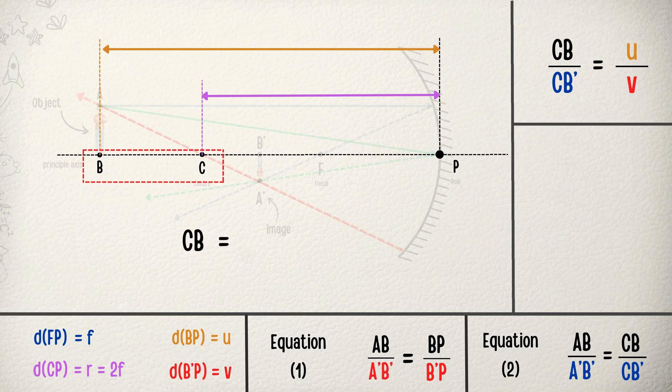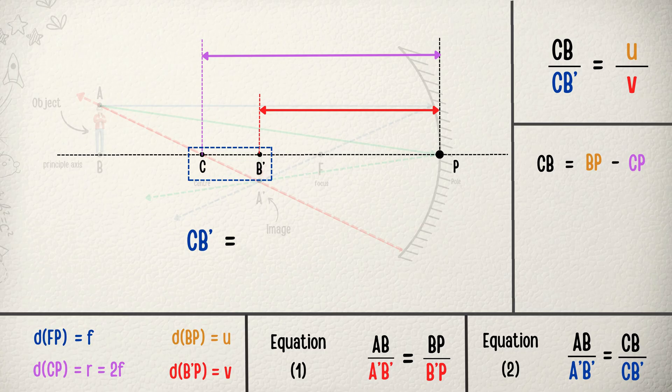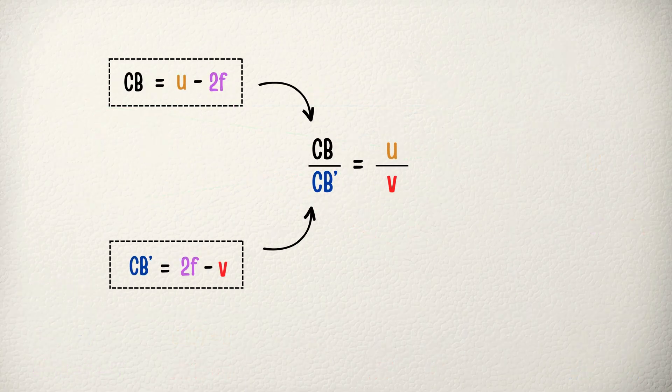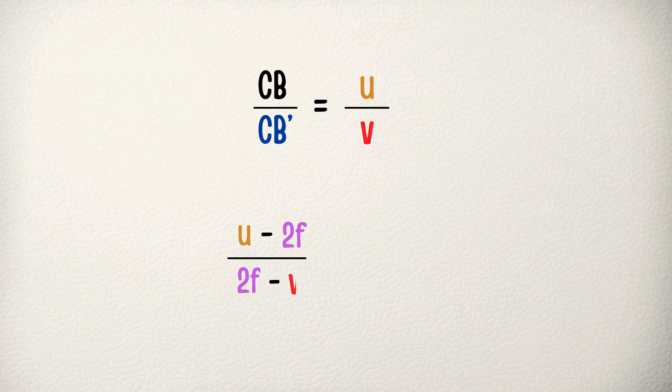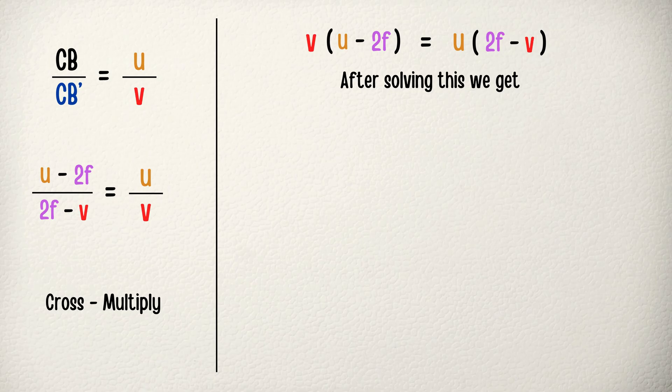CB can be written as BP minus CP, and CB' can be written as CP minus B'P. We already know the value of these four terms. So after putting all the values, we get (u - 2f) divided by (2f - v) equals u divided by v. Now we will cross multiply: v times (u - 2f) equals u times (2f - v). After solving, we get uv - 2fv equals 2fu - uv.